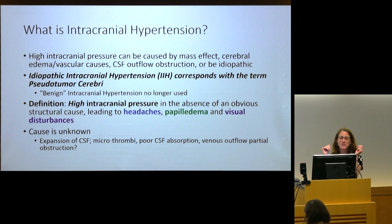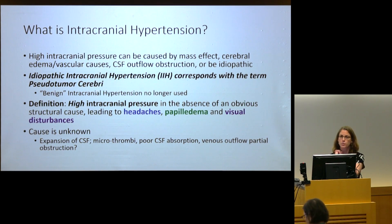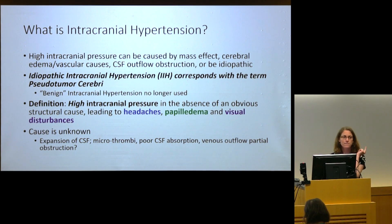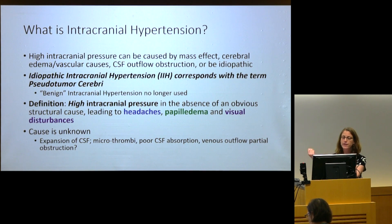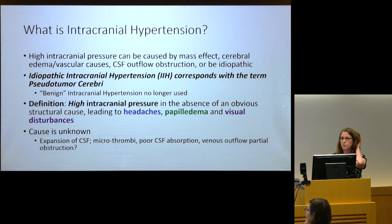This is a diagnosis made by excluding structural causes — or obvious structural causes — for high pressure in the head, including mass effect, vascular causes, and CSF outflow obstruction. The typical presentation is headaches, usually positional headaches, papilledema, and visual disturbances. And hearing about low-pressure headaches, you should start to think about some similarities in presentation between low and high-pressure headaches.